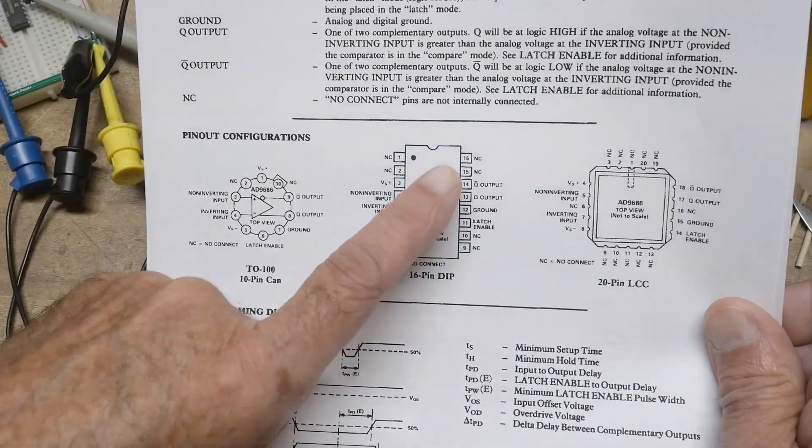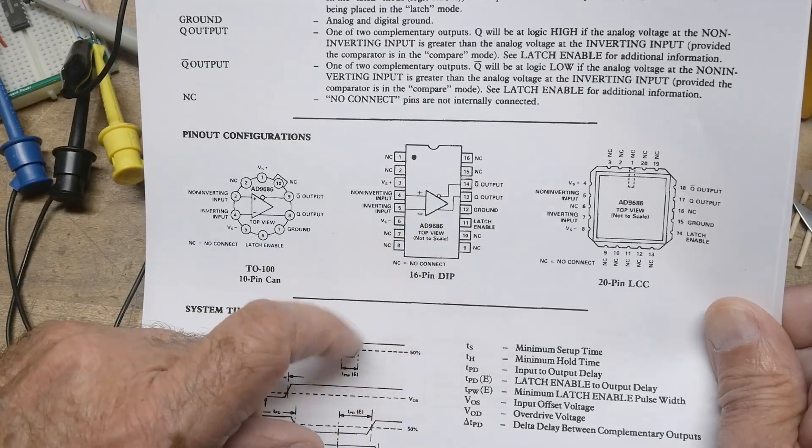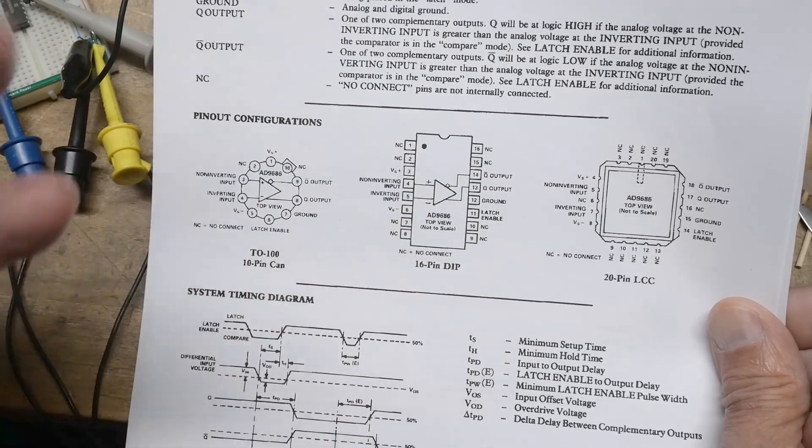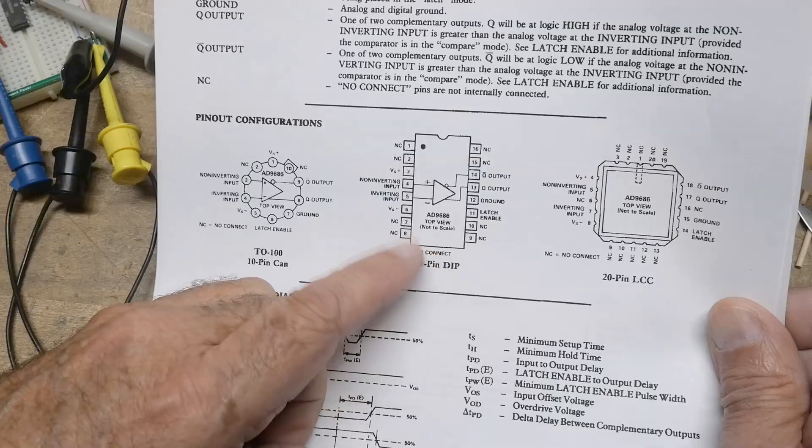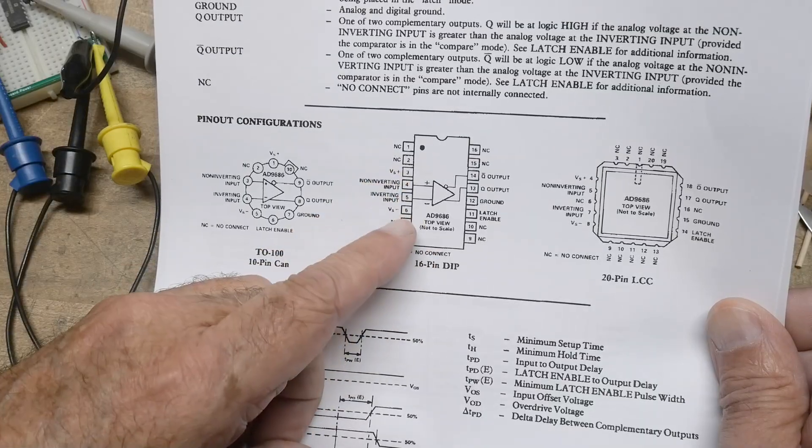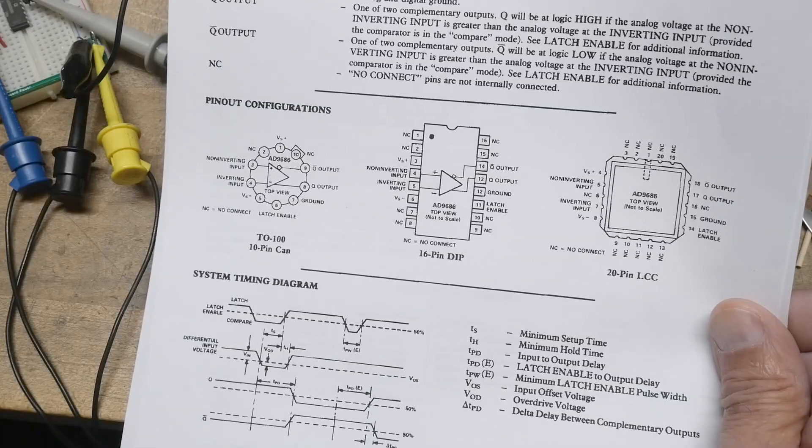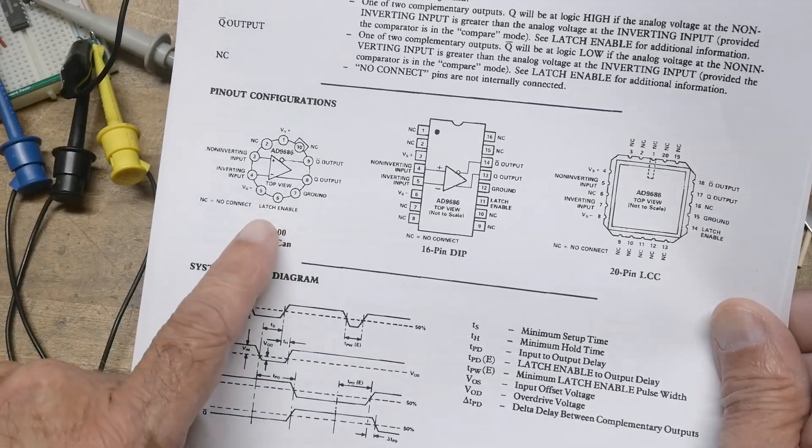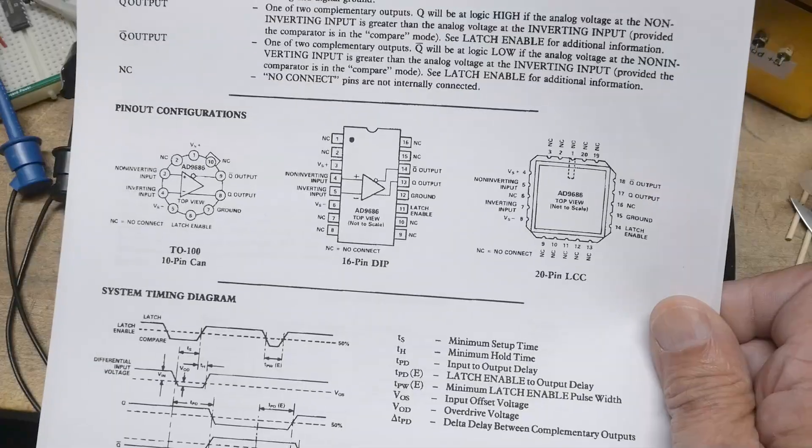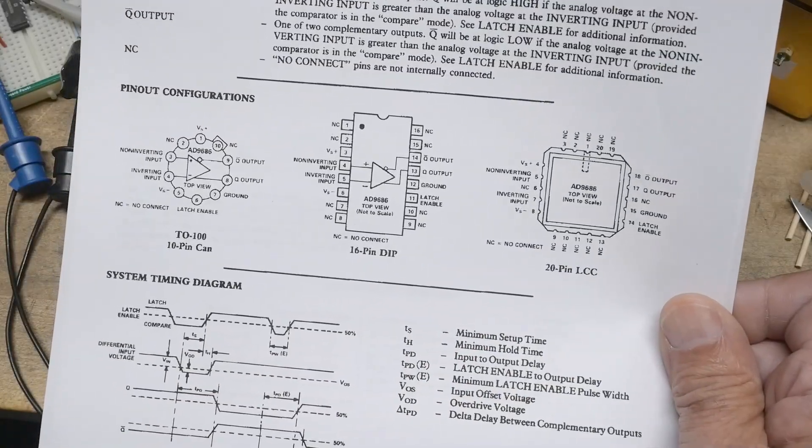All right. So why such a big package, you say? I say. It doesn't use many of the pins, but it's an interesting layout. It's plus V minus V input and output, and then outputs on that side. So I like the layout of the chip actually. You can also get it in a round can or in some kind of weird LCC package.